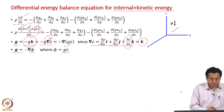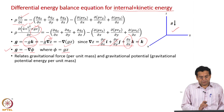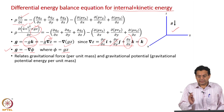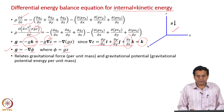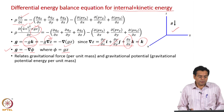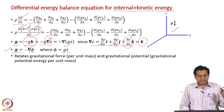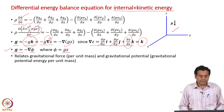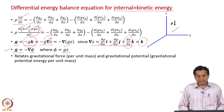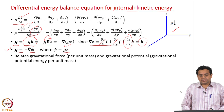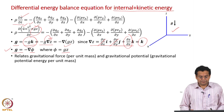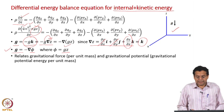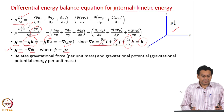This equation relates two viewpoints of g: on the left hand side we view it as force per unit mass, and on the right hand side we view it as potential energy per unit mass. The gravitational force is related to the negative of the gradient of the gravitational potential. So there are two ways of including the effect of gravity: we can view g as gravitational force per unit mass, or we can view it as gravitational potential energy per unit mass, and these two are related by this expression.